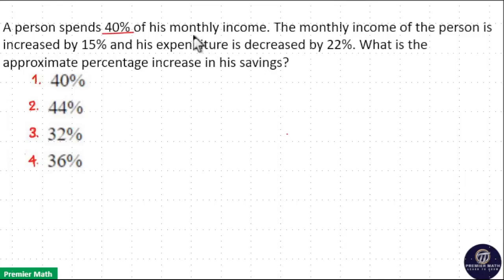A person spent 40% of his monthly income. The monthly income of the person has increased by 15% and his expenditure has decreased by 22%. What is the approximate percentage increase in his savings?